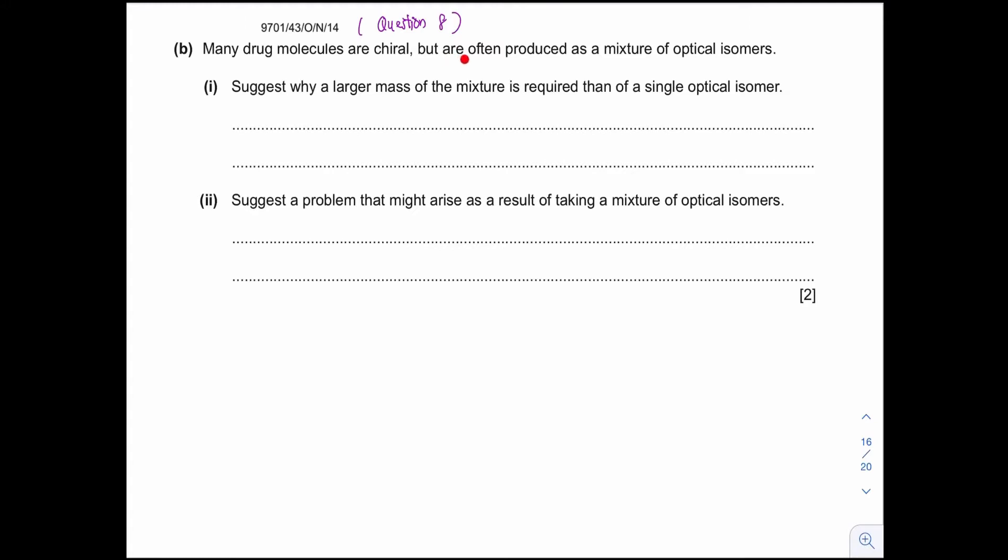Many drug molecules are chiral, but are often produced as a mixture of optical isomers. Now to be eligible to be an optical isomer means that compound must have a chiral carbon. Let's recall the concept on chiral carbon.